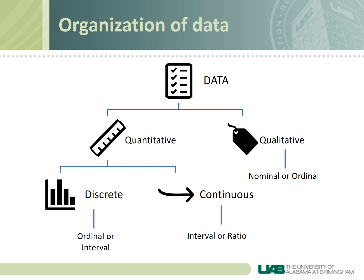Putting this all together: discrete data, which typically involves whole numbers that can only take on a limited number of values, can be measured on an ordinal or interval scale — for example, a five-point pain scale for ordinal, or number of males in a family for interval. Continuous data can be measured on the interval or ratio scales — blood pressure would be an example of interval data, and income an example of ratio data. Qualitative data can be nominal, such as eye color, or ordinal, such as high school classification: freshman, sophomore, junior, or senior.